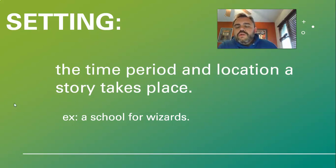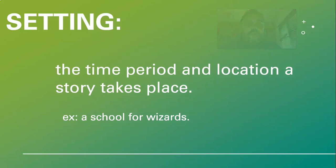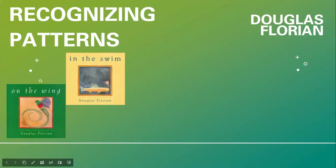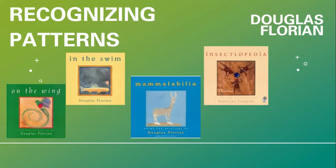All right, quick review — you got it, you guys are all stars. So let's take these ideas and really examine and start to look for some patterns across books by the same author. To do that, we're going to look at recognizing patterns. We're going to visit some books by the author Douglas Florian. You might remember him as the author of On the Wing, In the Swim, Mammalabilia, and Insectalopedia — very, very interesting names.